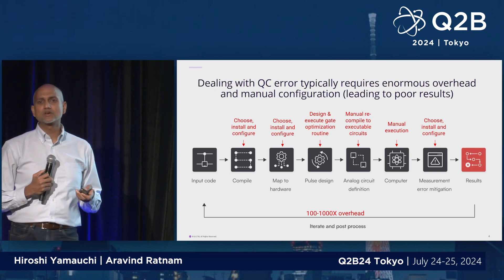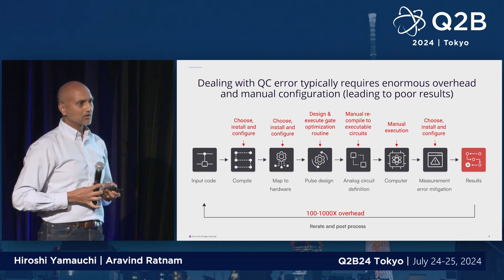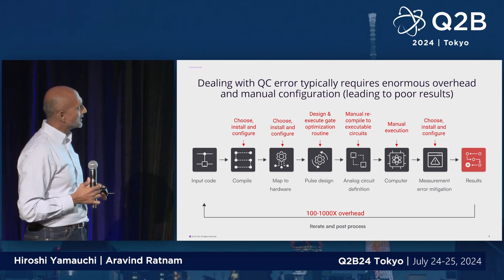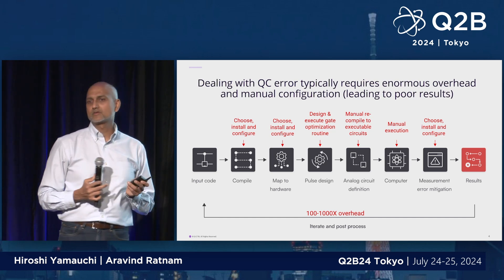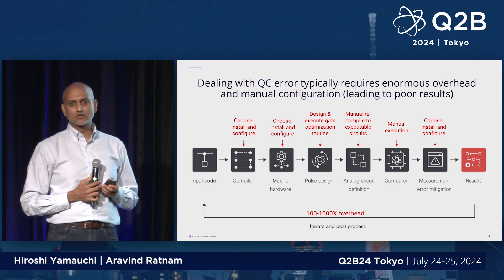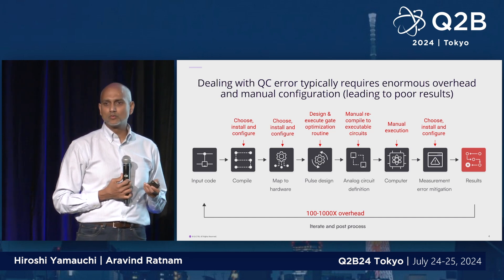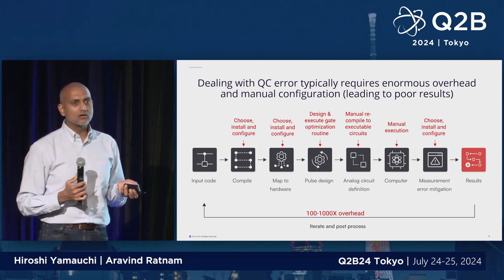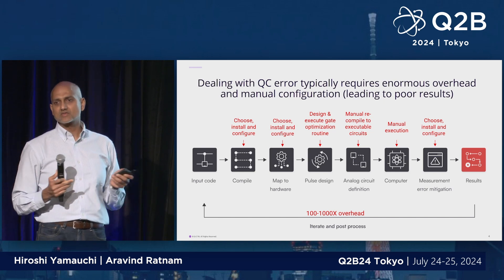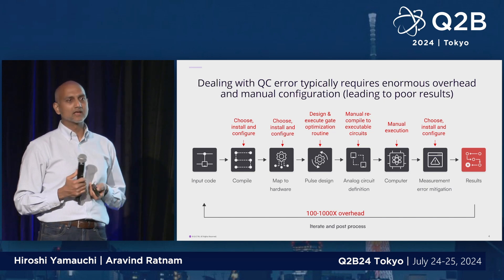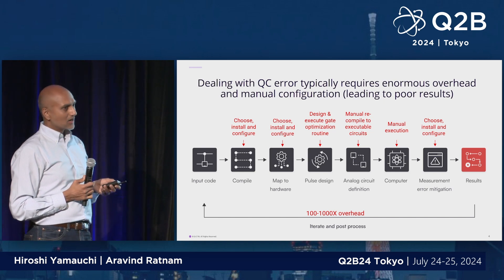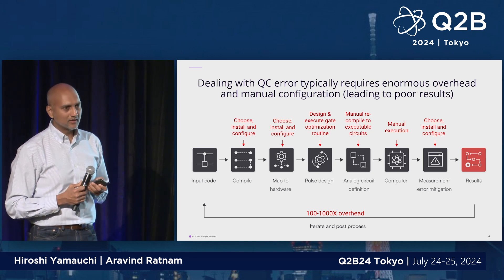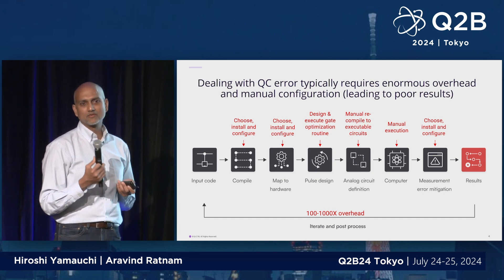The way in which our software works — and this is specifically called error suppression — is through a set of steps. Those of you who have looked into the problem know that taking out all of the error requires a whole number of steps that have to be linearly executed. But it's a very, very difficult problem.